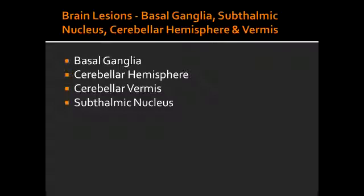What is the consequence of subthalamic nucleus lesion? If the subthalamic nucleus is lesioned, it would lead to contralateral hemiballismus, which happens in lacunar stroke.